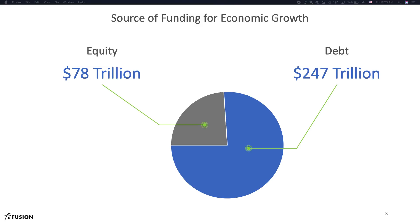Before introducing Fusion's model of debt, I will start with an example. Debt comes in many flavors of payment styles, seniority, and maturity dates. We'll start with one of the simplest: a fixed coupon, that is interest, with a fixed maturity date bond.